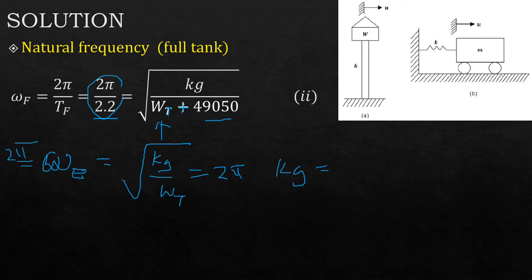So if you look at this equation here, if you have to make kg the subject of the formula, you just get kg equals 2π squared times WT, the weight of the tank. The same case, you can make kg for equation two the subject of formula. And once you make kg the subject in equation two, you can equate the two expressions.